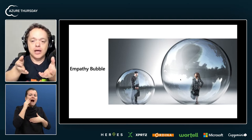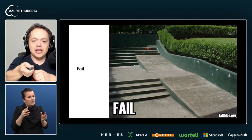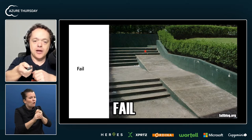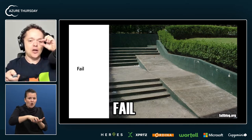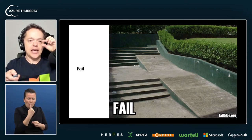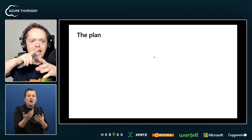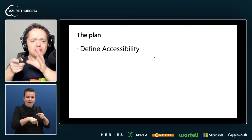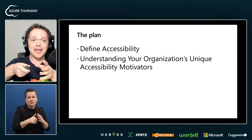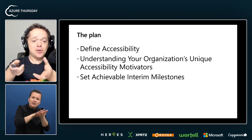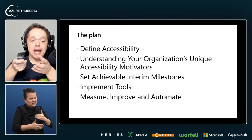You can't be me because your experiences and my experiences differ — it's just the nature of being human. And how do we get out of those bubbles? Because if you don't get out of those bubbles, then you're going to design for accessibility but you won't know that something over there is almost impossible. I remember when learning to walk, I had about a one-centimeter gap that I had to get over. So let's start with a plan on how we can actually get you more accessible: define accessibility, understand your organization's unique accessibility motivators, show the difference between a stick and a carrot, set achievable interim milestones, tools, and finally measure, improve, and automate.